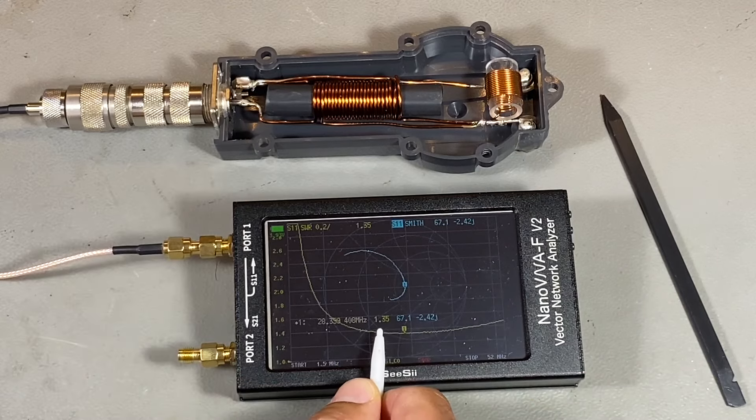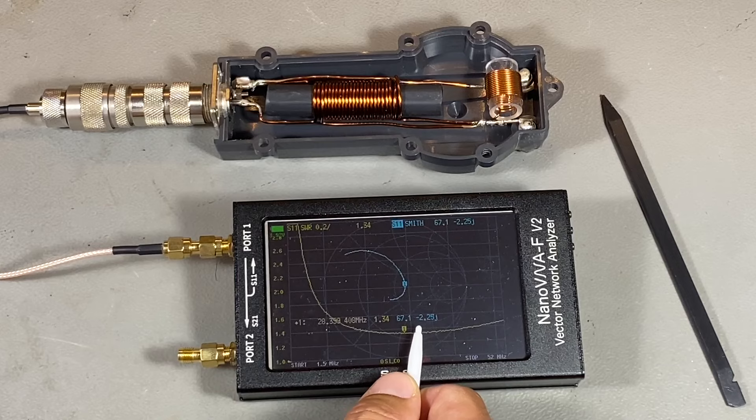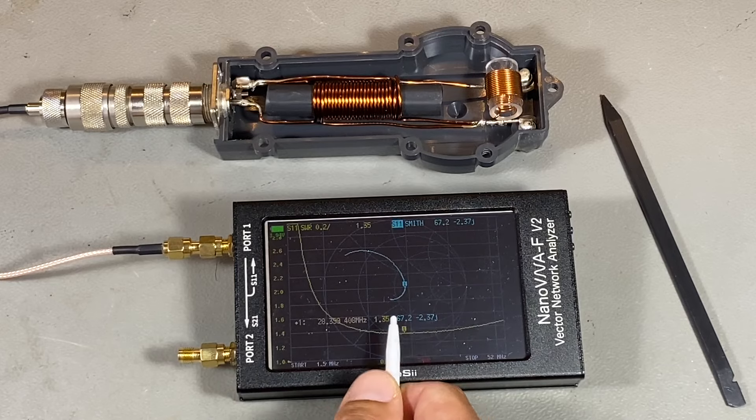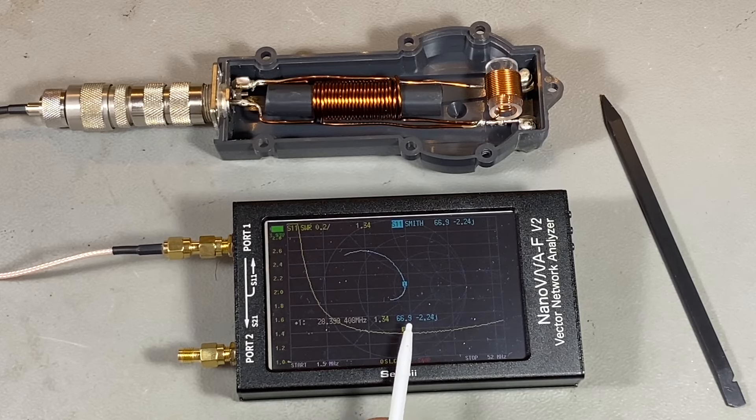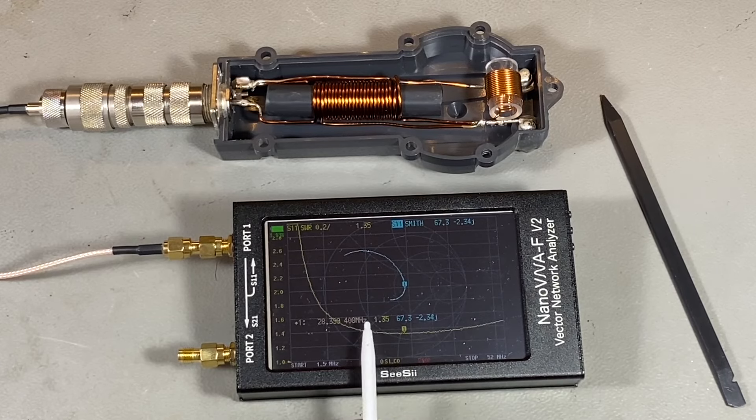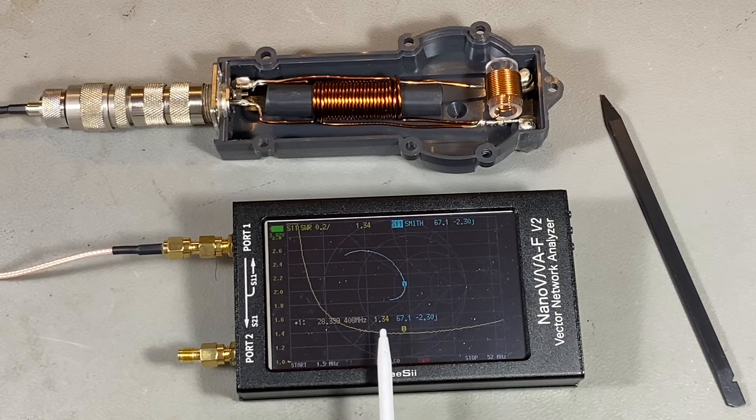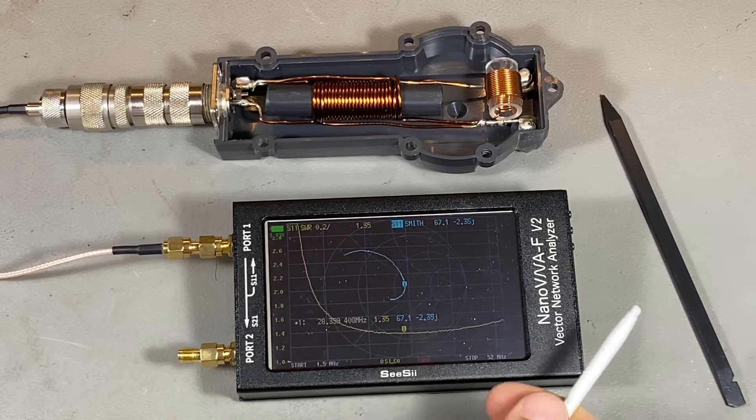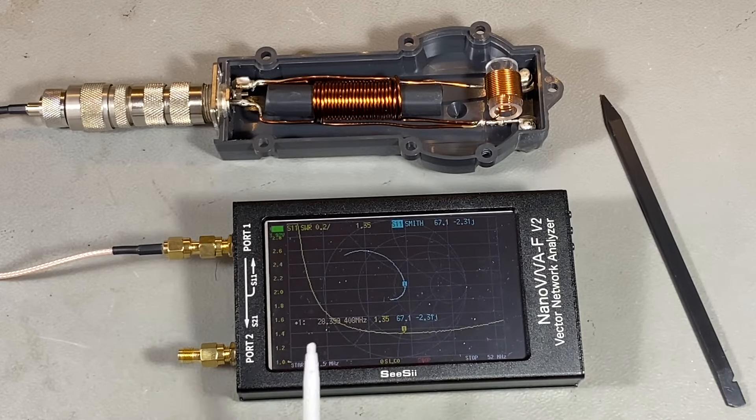Next band is 10. Here we have more or less the same, 1.35. We have already changed to the capacitive side of the Smith chart. But the SWR basically here is not 1-to-1 because of the resistive part which is not seen as 50 ohms. So I'm wondering what kind of transformation we have here.